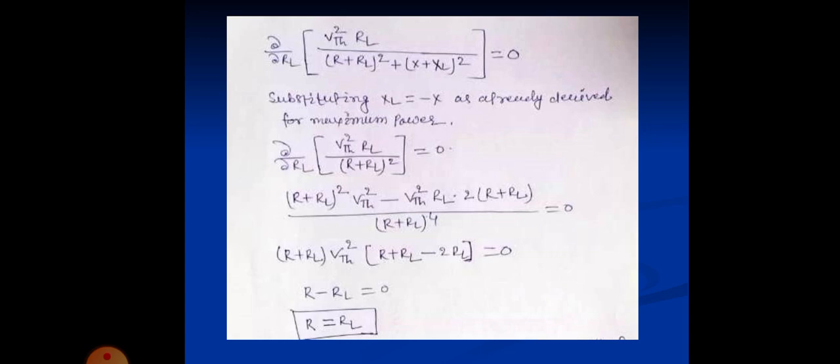So differentiation of d upon dRL VTH square into RL upon R plus RL square, this differentiation equal to 0. So the given equation is R minus RL equal to 0, so R equal to RL.